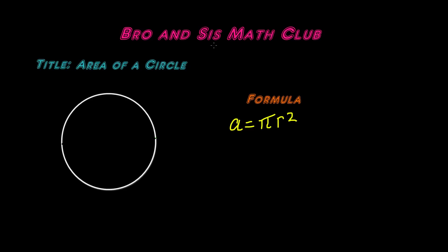Hey guys, welcome back to Bro and Sis Math Club. Today we'll be learning how to find the area of a circle. The formula for finding the area of a circle is area equals pi r squared, or pi times radius squared.